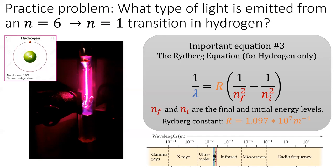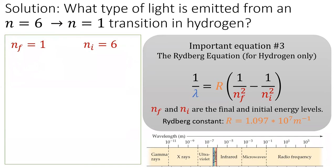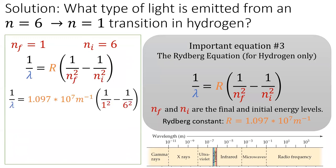Let's give the Rydberg equation a shot in a practice problem. What type of light is emitted when an electron in hydrogen falls from the sixth energy level to the first energy level? Pause the video and try solving this yourself. We'll start by noting that the final energy level is one, and the initial energy level is six. We'll plug that into the Rydberg equation and simplify the right side. Then, if we take the inverse of the right side, we can get wavelength of nine times ten to the negative eighth meters. Referencing the electromagnetic spectrum to the right, we see that this wavelength corresponds to some high energy ultraviolet light.